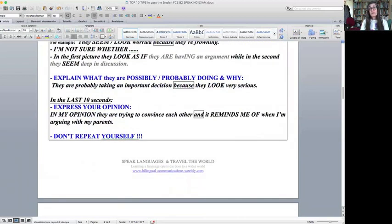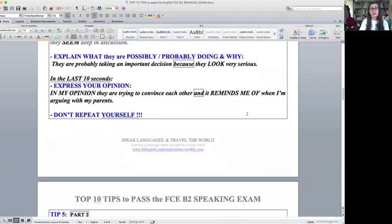Explain what they're possibly or probably doing and why. They're probably taking an important decision because they look very serious. Then you have the last 10 seconds in which you can express your opinion. In my opinion, they're trying to convince each other and it reminds me of when I'm arguing with my parents. So you don't have time to repeat yourself. Be careful you don't repeat yourself because 30 seconds for the second part isn't very much either, and you have a total of one minute. So you must practice with a timer, with a stopwatch.